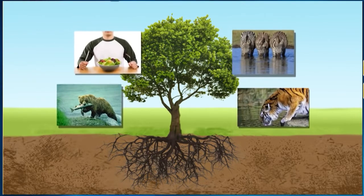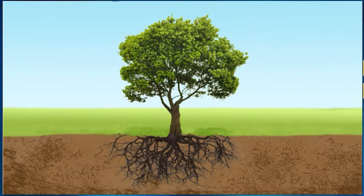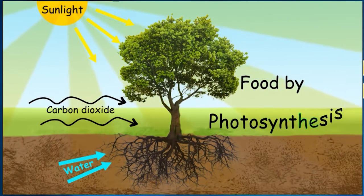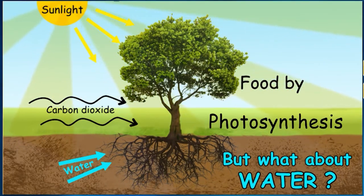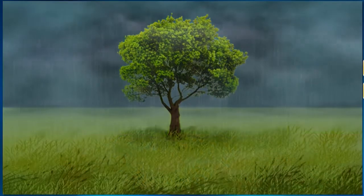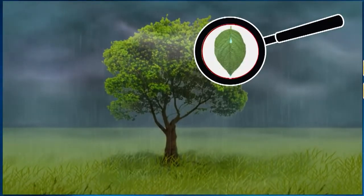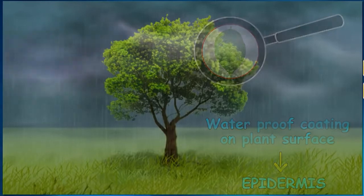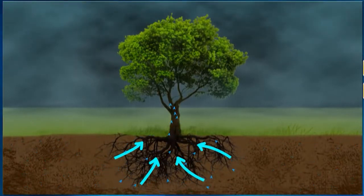Like any other living organism, plants also have the same requirements of food and water to live. Plants prepare their own food through photosynthesis. But what about water? From where do they get their required water? The water that falls on the plant is not absorbed by it, as the plant has a waterproof coating on its entire surface called the epidermis. So the water that falls on the ground is absorbed by the roots and then supplied to all the parts of the plant.